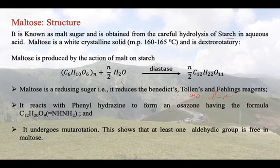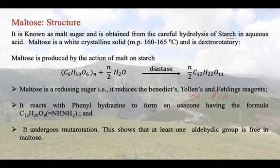Maltose reacts with phenyl hydrazine to form an osazone having the formula C12H20O9·(NH-NH-C6H5)2. So we can say that there is at least one CHO group, or we can say a carbonyl group C=O.